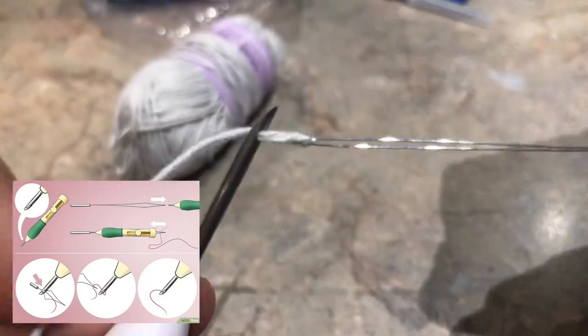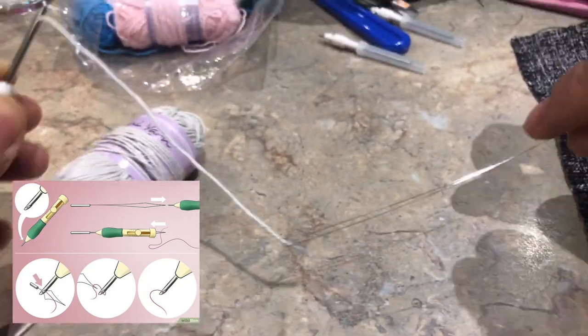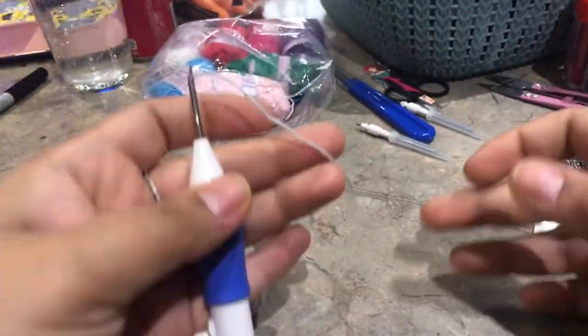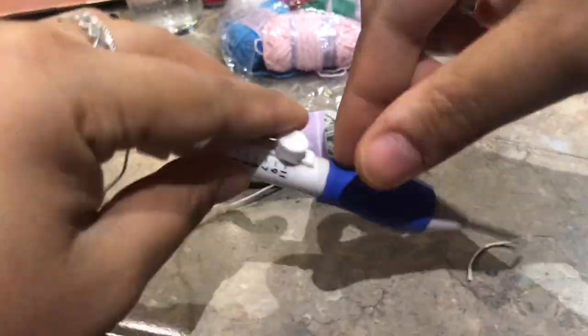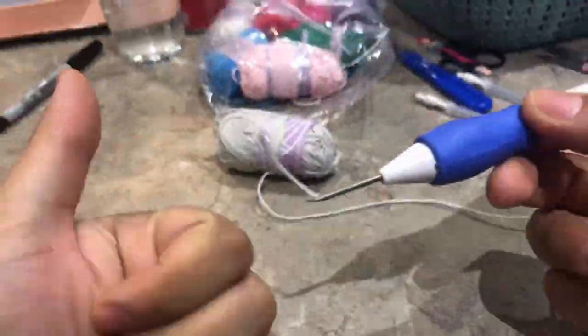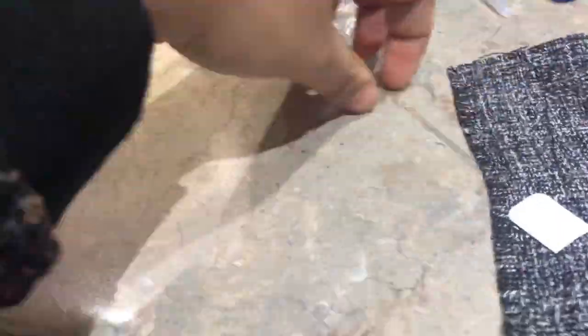The bigger the needle, the bigger the yarn size or thread you could use. The skinnier the needle, the skinnier thread you need. Then just pull through a little bit of a tail and stab it through your fabric.